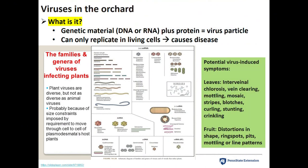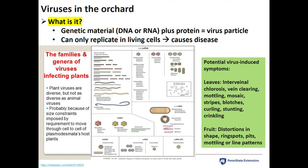When a virus causes disease, it can manifest in different symptoms in leaves and fruit. Characteristic leaf symptoms include interveinal chlorosis, vein clearing, mottling, mosaic, stripes or blotches, leaf curling, stunting, and crinkling. One thing to caution is that herbicides can cause very similar symptoms. So if you ever see funny leaf symptoms in your orchard, do a very methodical step-by-step analysis to understand what could be going on, because herbicides can look very similar.